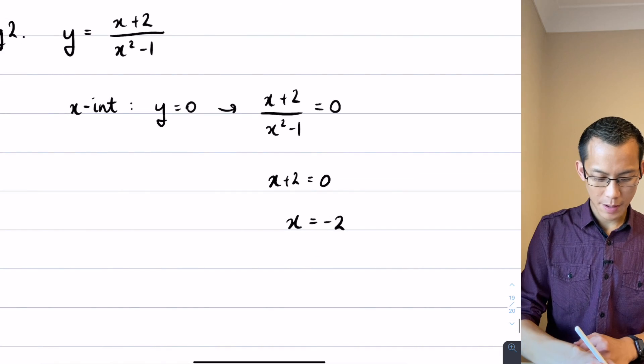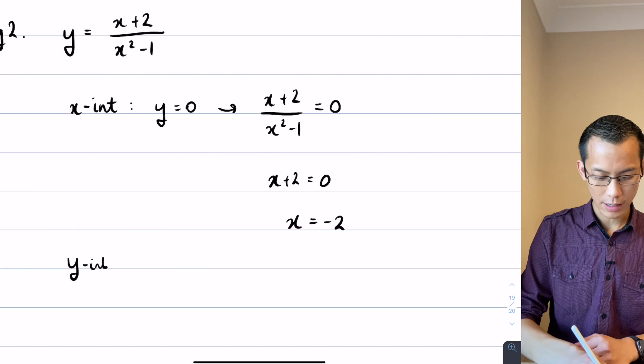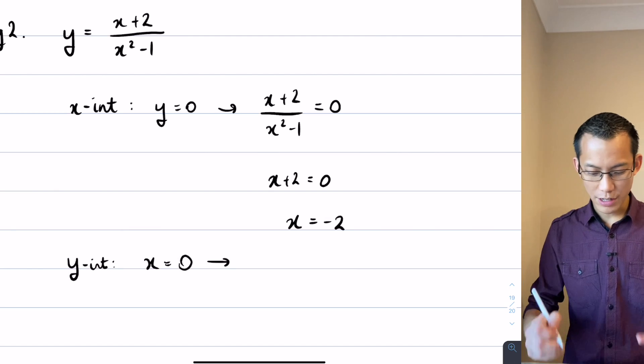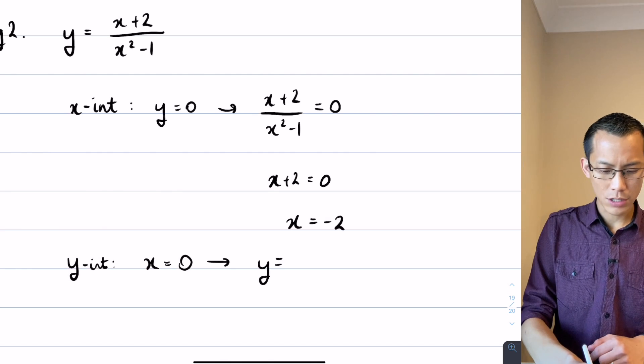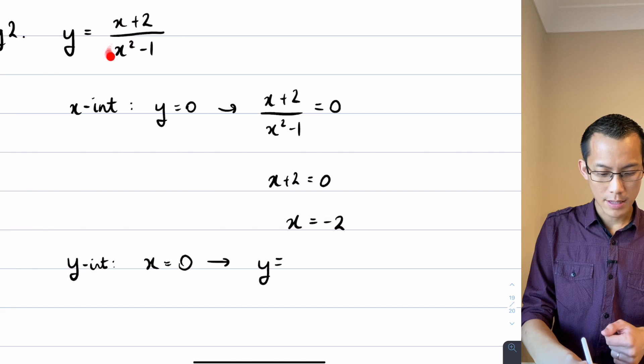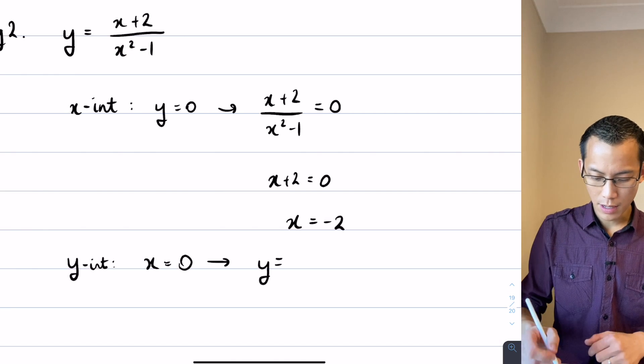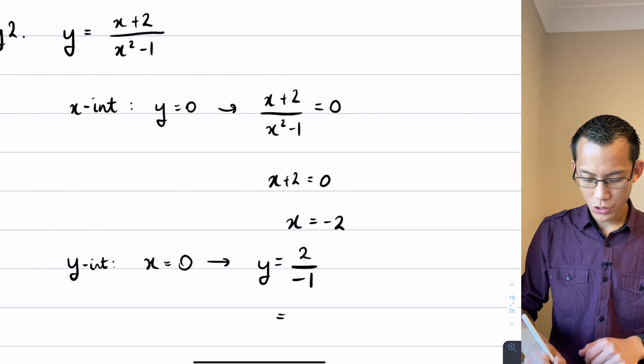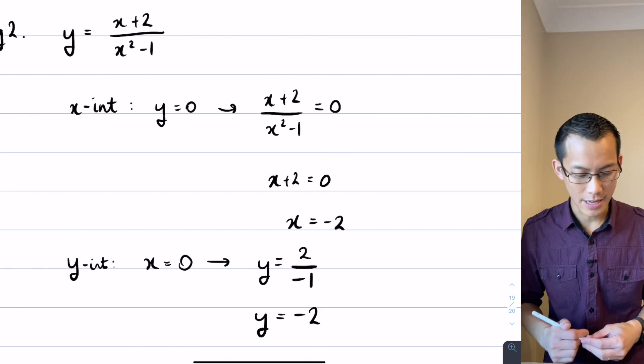Let's move on and do a y-intercept, so I'm going to do exactly the same thing but in reverse. I'll let x equals 0, and when I do the substitution, you can see this x term becomes nothing. This x term also becomes nothing. So you just get left with 2 on negative 1, which is negative 2. So there's our y-intercept.